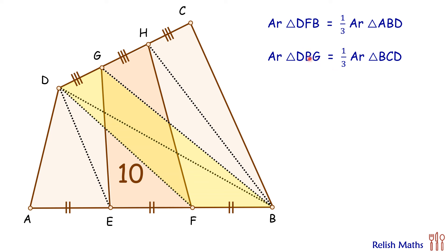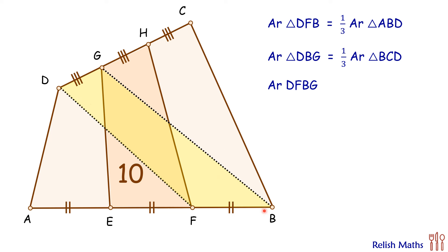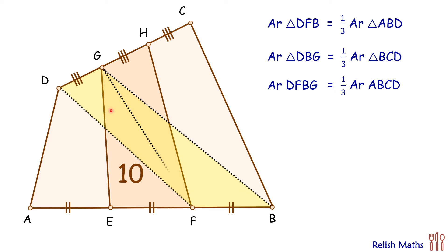Now if we add these two, on the left-hand side we get triangle DFB plus DBG, which together form quadrilateral DFBG. So the area of quadrilateral DFBG equals one third the area of ABD plus BCD. But ABD plus BCD forms the full quadrilateral, so this yellow region is one third the area of quadrilateral ABCD.